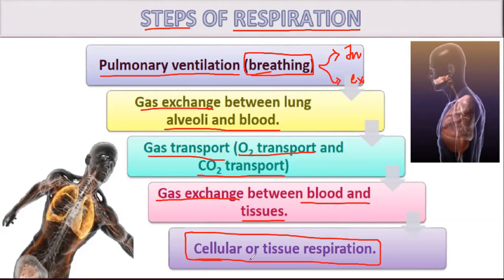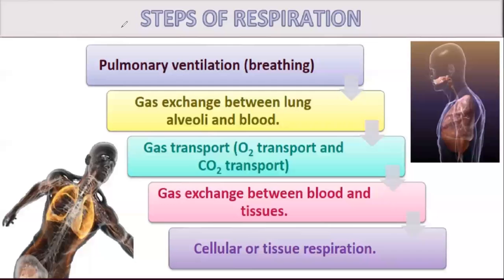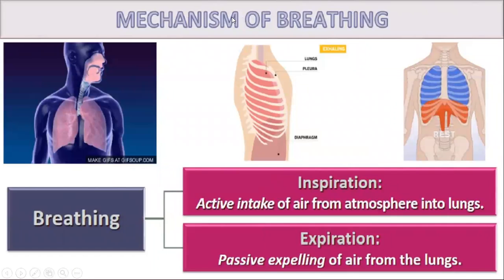So the sequence is: pulmonary ventilation first, involving inhalation and exhalation. Then oxygen-rich blood enters the alveoli and is exchanged with the blood. This blood transports oxygen to the tissues and collects carbon dioxide from them. That carbon dioxide and oxygen are then utilized for tissue respiration or cellular respiration.